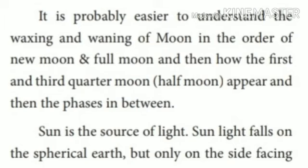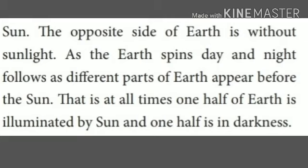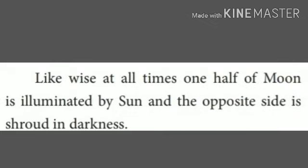It is probably easier to understand the waxing and waning of the moon in the order of new moon and full moon, and then how the first and third quarter moon and half moon appear, and then the phases in between. Sun is the source of light. Sunlight falls on the spherical earth but only on the side facing the sun. The opposite side of earth is without sunlight. As the earth spins, day and night follows as different parts of earth appear before the sun. At all times, one half of earth is illuminated by the sun and one half is in darkness. Likewise, at all times, one half of the moon is illuminated by the sun and the opposite side is in darkness.